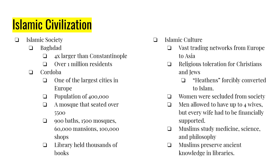Women were rigorously restricted in their public life — they could not be seen out in public. The Quran permitted men to have up to four wives; however, you could only have as many wives as you could financially support. The Quran also gave Muslim women the right to control their dowries, their bride price, meaning that even though they couldn't freely go out in public, they could still use some of their inheritance to get remarried if something happened to their first marriage. Muslims also studied medicine, science, and philosophy — much of our modern-day medicine and modern-day psychology comes from this period of time.